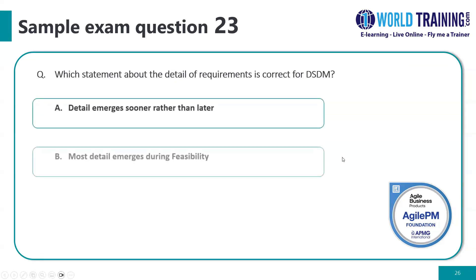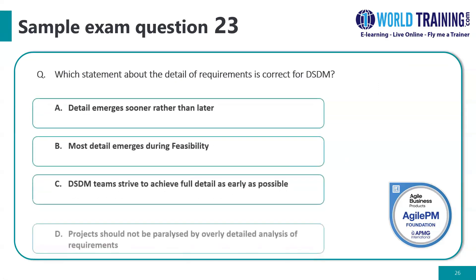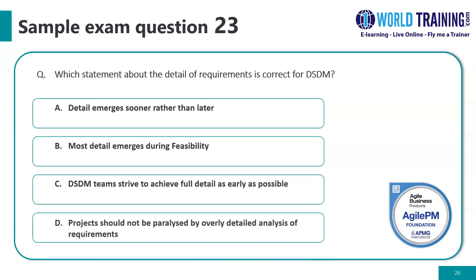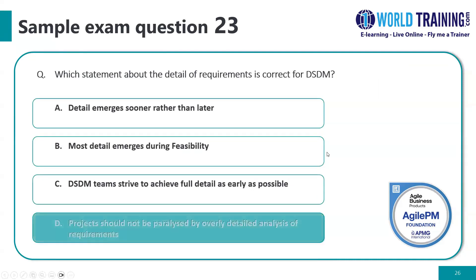Question number twenty-three: which statement about the detail of requirements is correct for DSDM? The correct answer is D: the project should not be paralyzed by overly detailed analysis of requirements.